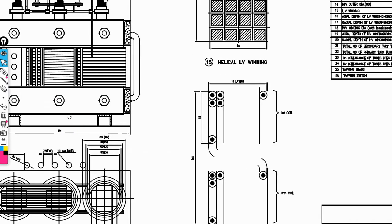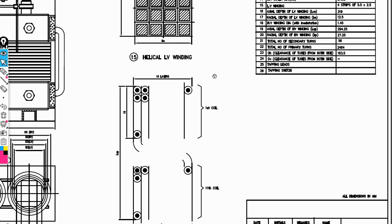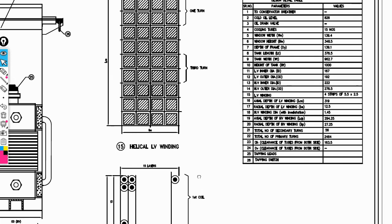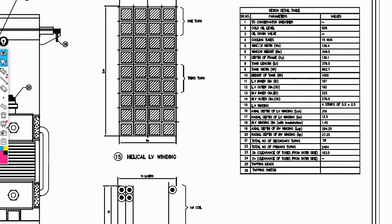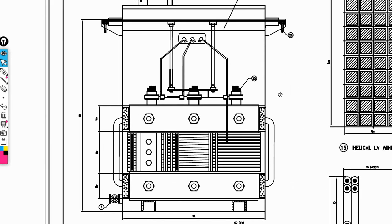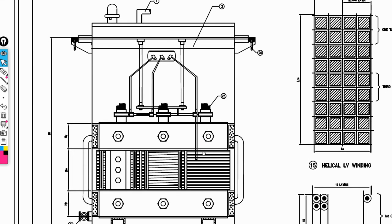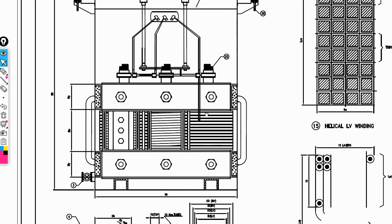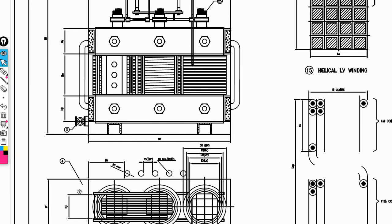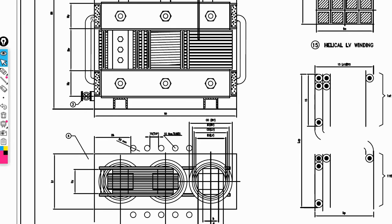These are the important points we need to design in AutoCAD. Also, cooling tubes — we need cooling tubes; each and every part will be present here. These cooling tubes are indicated here.